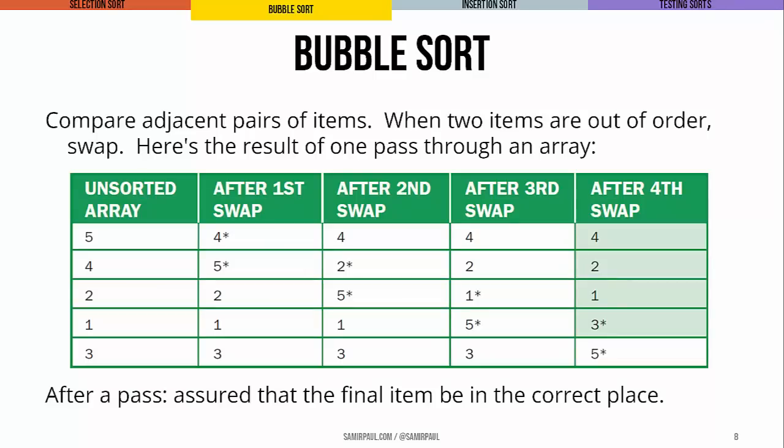Here's what that looks like in a step-by-step form. Starting with the unsorted array 5, 4, 2, 1, 3: the first comparison is 5 and 4, which gets swapped. The second comparison is 5 and 2, which gets swapped. Then 5 and 1, which gets swapped. Finally, 5 and 3, which gets swapped. We can see that the 5 has bubbled its way to the top — it's the highest value and is in the right place. Then we start another pass, this time going from positions 4 to 3, starting with 4 and 2. Since 4 is greater than 2, those would get swapped, and so on.